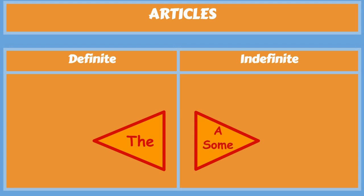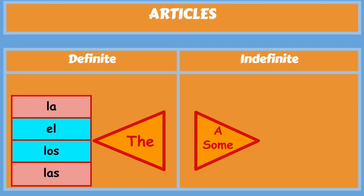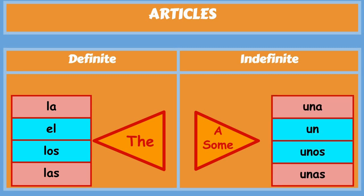In Spanish you have four definite articles: la, el, los, and las. And you have four indefinite articles: una, un, unos, and unas.